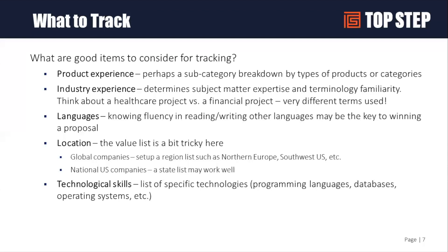Location is something people want to track because when you're scheduling resources and trying to find the best fit, it's great to say: if I have a choice between two people, which person is closer? That'll be less expensive to send on travel, so it's less cost to the customer. The only problem with location is there are a lot of locations in the world, so it's pretty hard to get a comprehensive list. Location tends to be tracked at a higher level — maybe what office you report to, or whether you're on the east or west coast of the US, or what country in Europe.